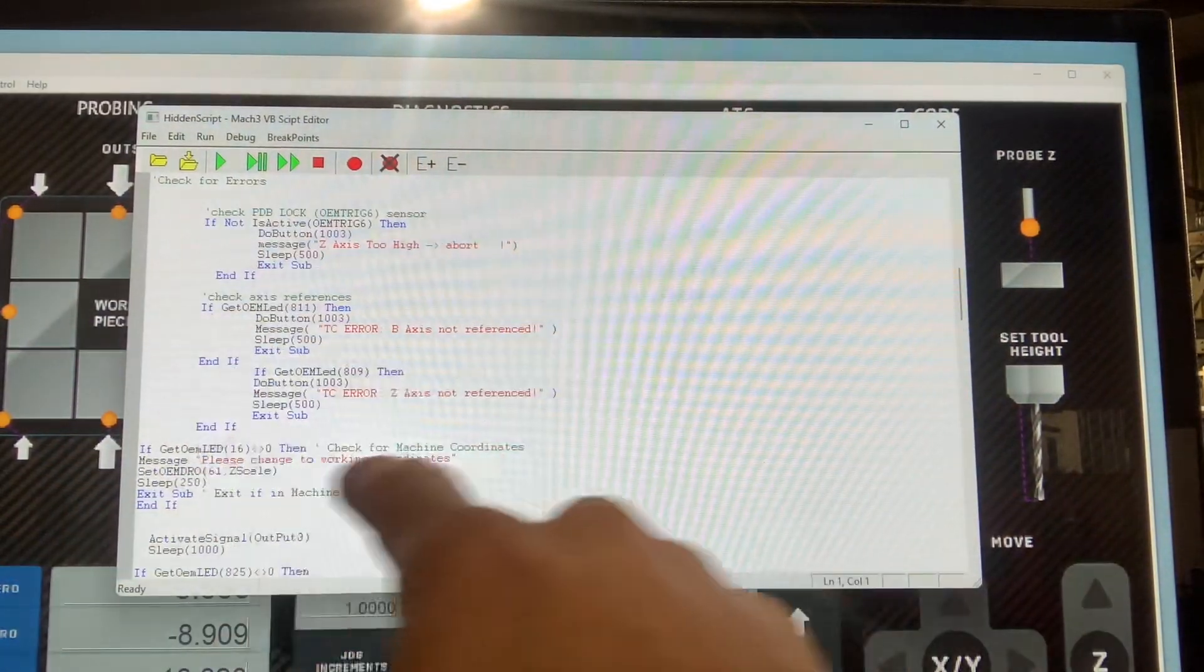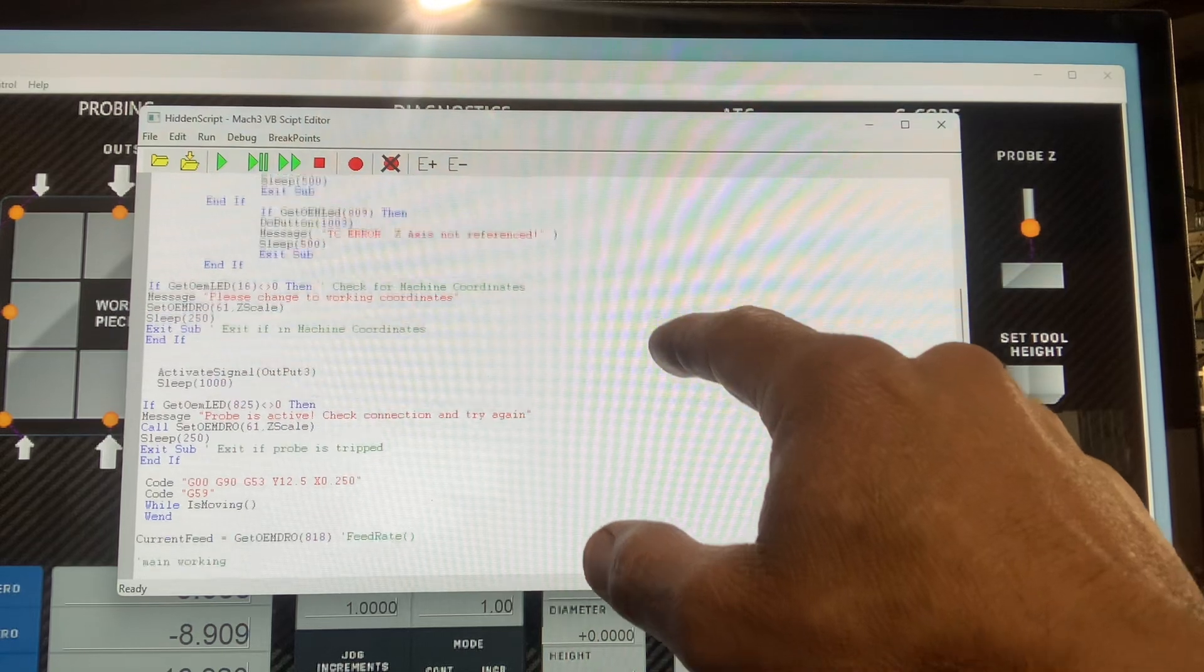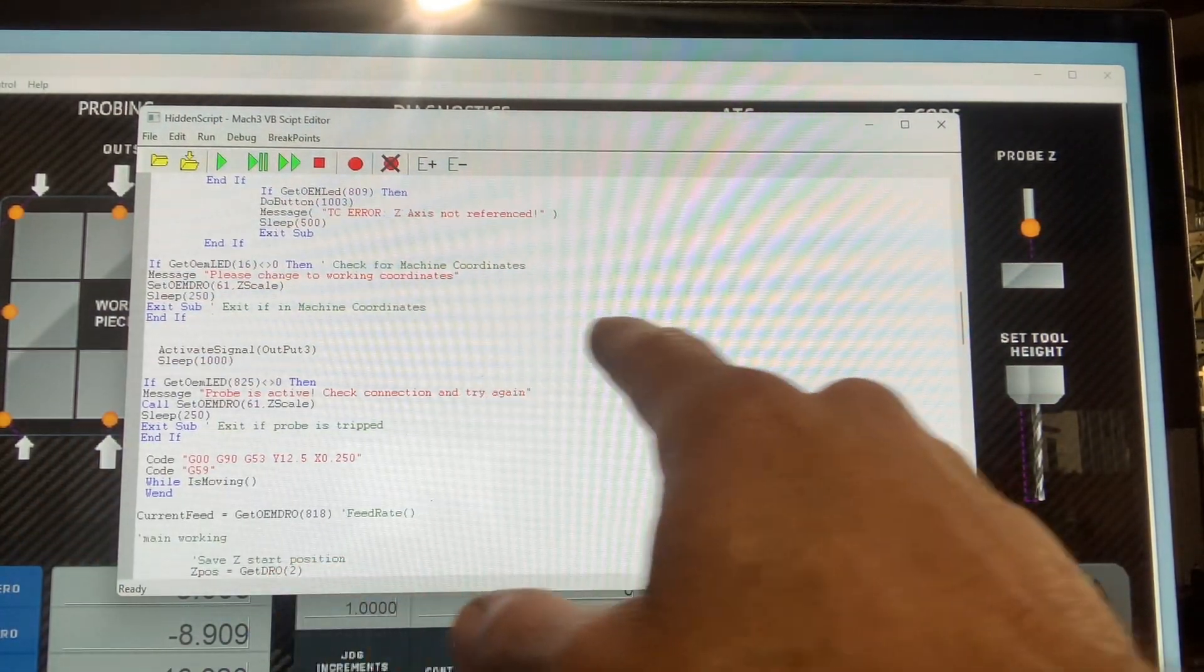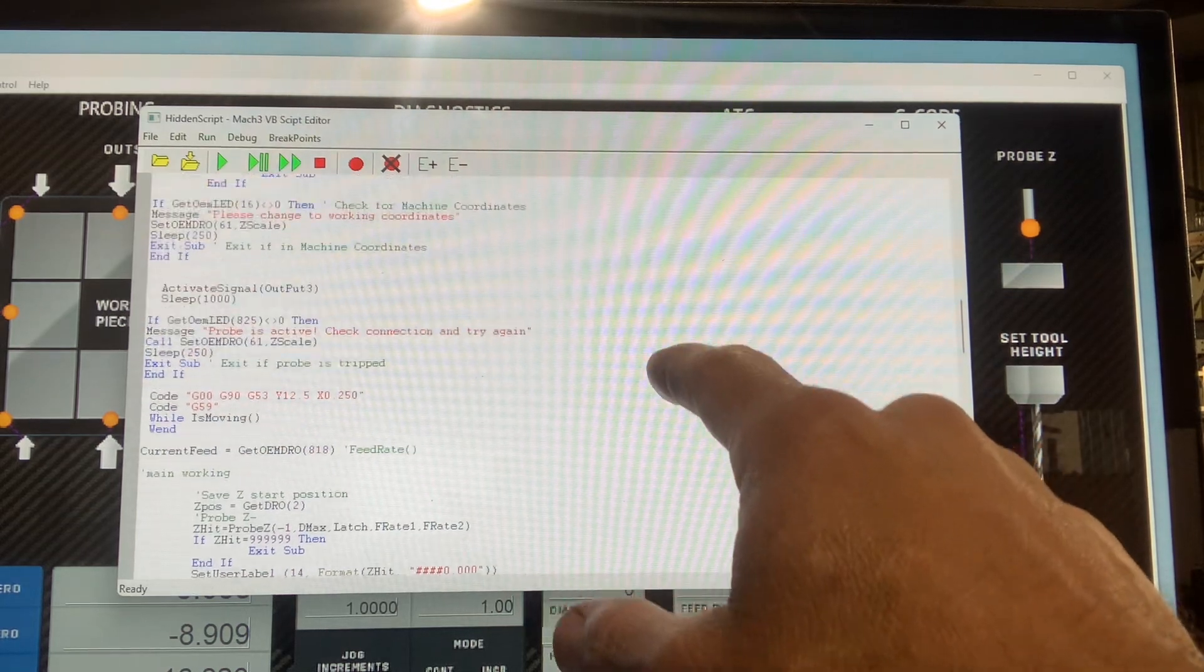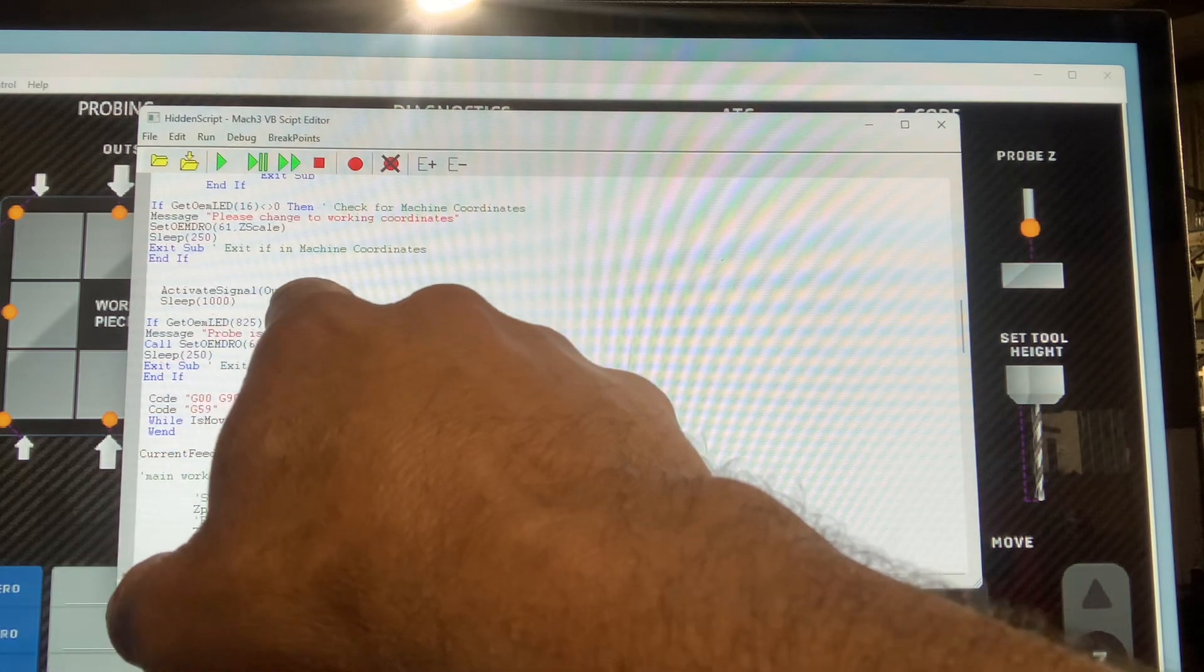So this part you saw the other day in the last video. Here I'm making sure I'm on working coordinates, then I turn on my output. I activate output number three.